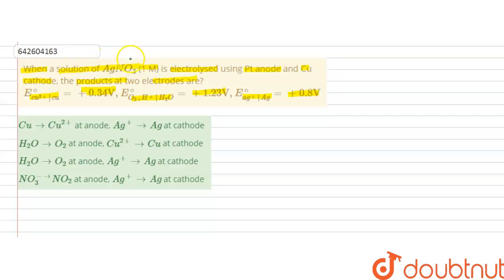In this question, when AgNO₃ solution is electrolyzed using platinum anode and copper cathode, the products at anode and cathode are... When AgNO₃ dissolves in water, it gives Ag⁺ and NO₃⁻ ions. Water will also be present, giving H⁺ and OH⁻ ions.